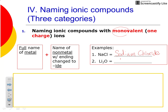Here we have lithium, so we name the first element, L-I-T-H-I-U-M. And then oxygen changes to oxide, O-X-I-D-E. Notice there are no polyatomic ions here, so you take the second element's root name plus -IDE, and you do not change the first element's name. All metal names stay the same.